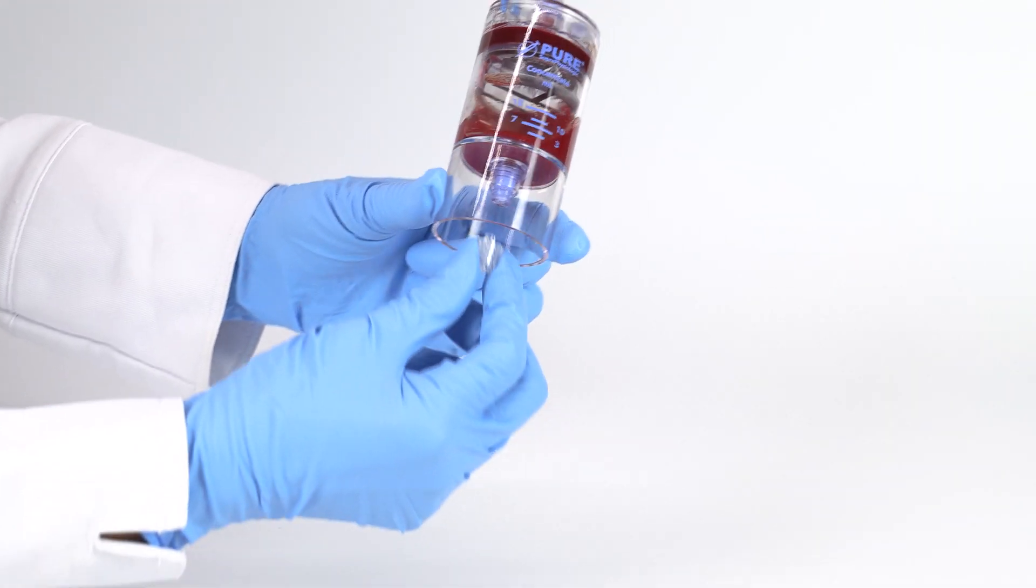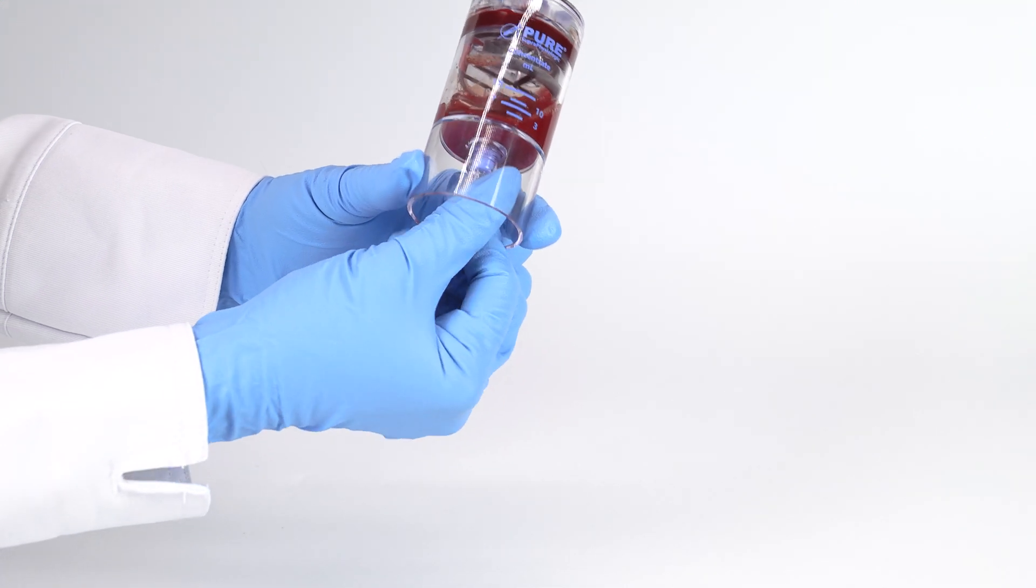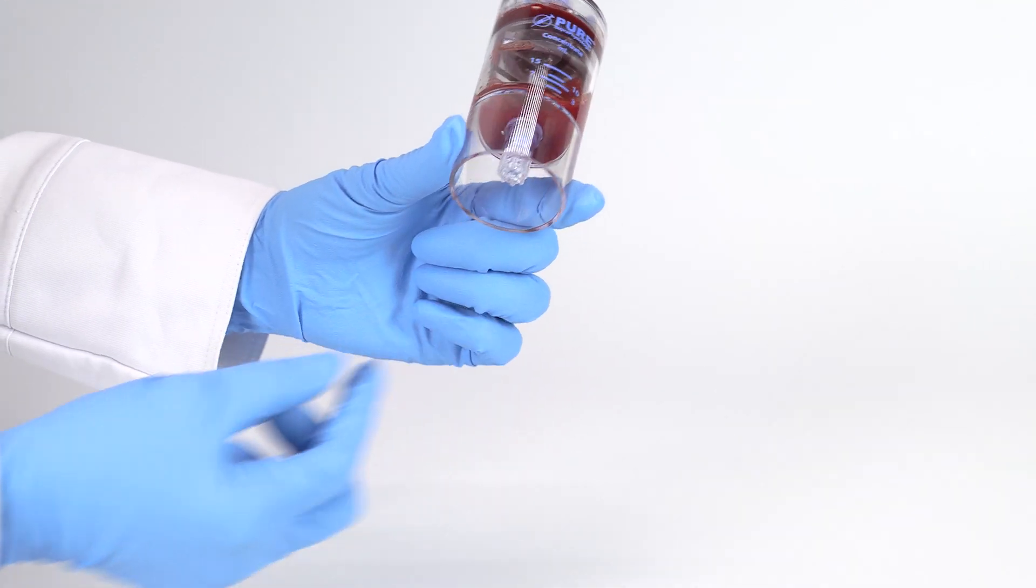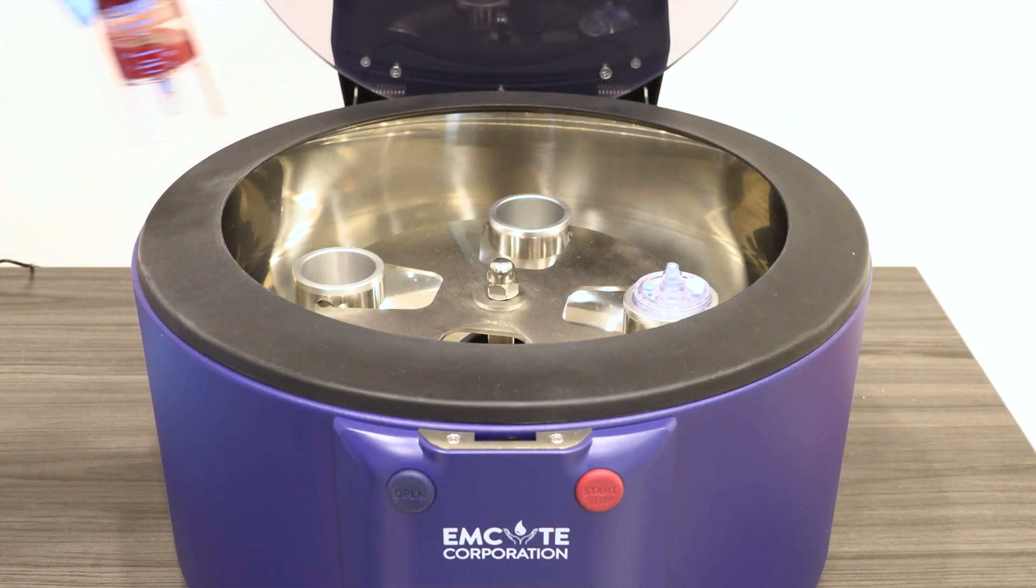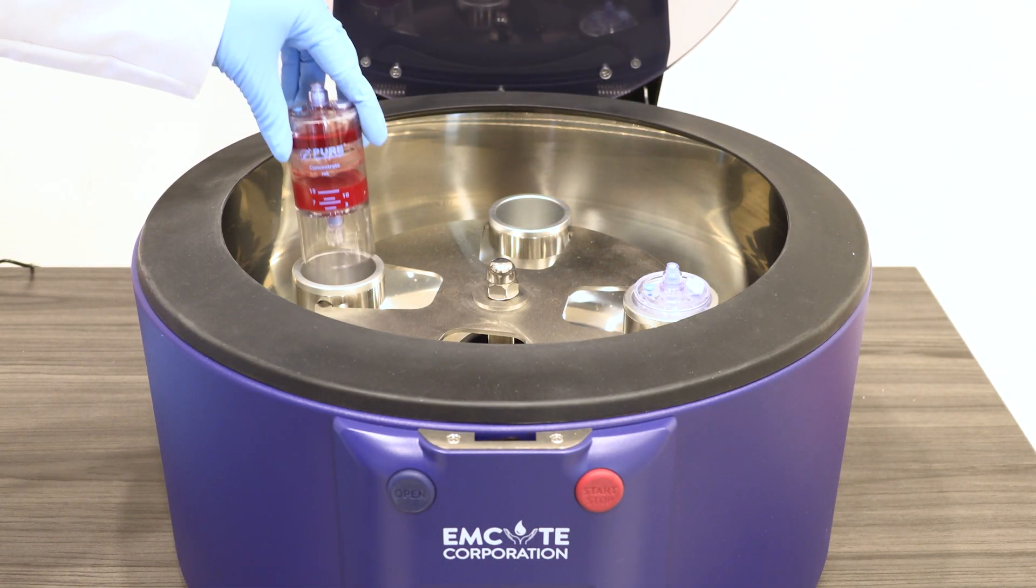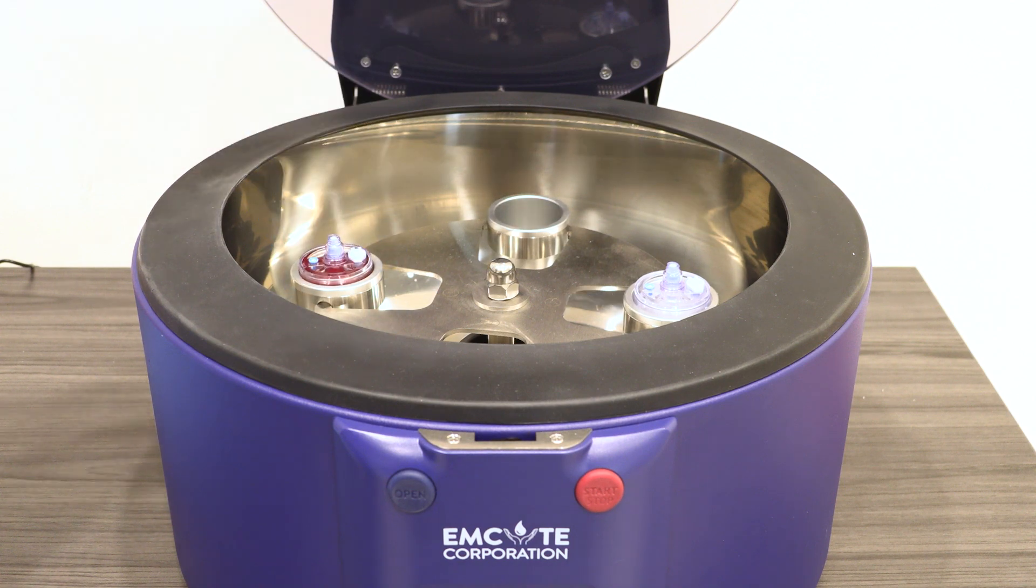Place a sterile clear non-vented cap back onto the bottom port and place back into the centrifuge rotor at opposite ends. Follow the protocol settings provided in the Pure BMC2 IFU insert. Close the centrifuge lid and press start.